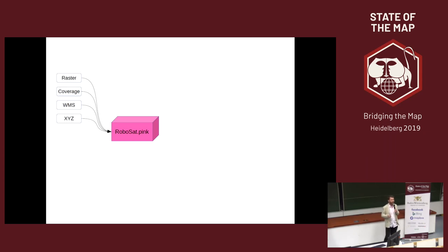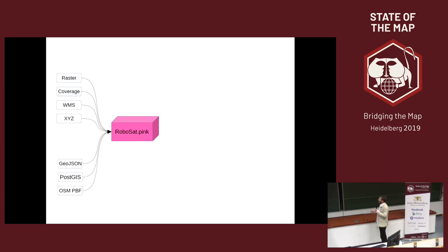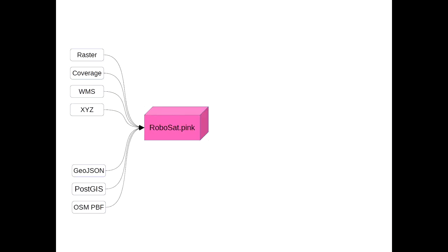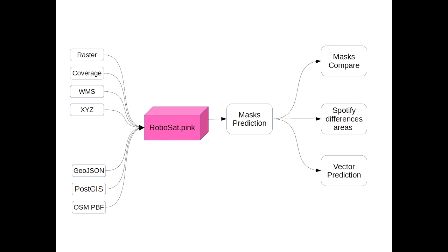What kind of imagery are we able to handle? Raster coverage, web services as input. And related to vector, it could be OSM Protobuf, PostGIS, GeoJSON. The only requirement is to have imagery readable by GDAL and georeferenced, plus a vector. And since you have that input, you're able to train your model, generate mass predictions, compare them, spot differences, and extract vector from your mask. That's the whole process.